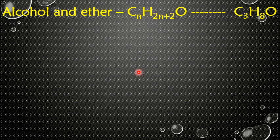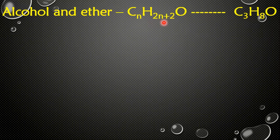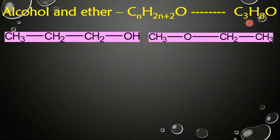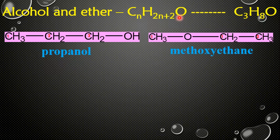Let's consider the first category: alcohol and ether. They share the common molecular formula CnH(2n+2)O. If we take a molecule with three carbon atoms, the molecular formula is C3H8O. We can draw an alcohol and an ether with this formula. In propanol the functional group is an alcohol — that is, OH — while in methoxyethane the functional group is an ether.